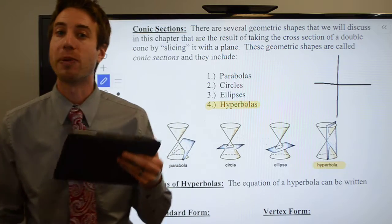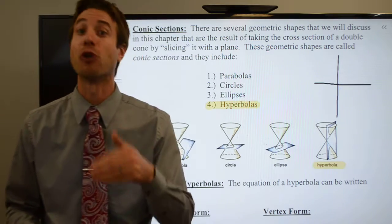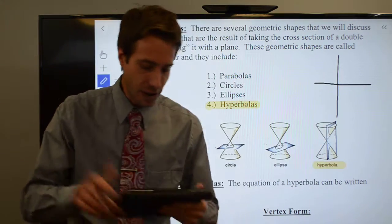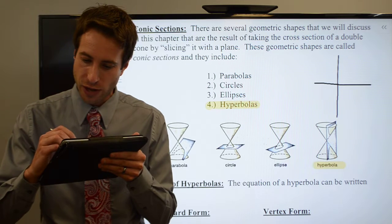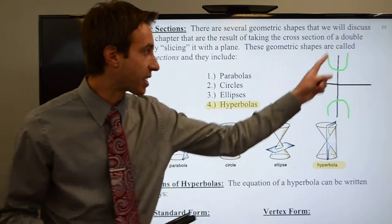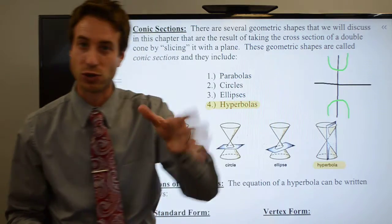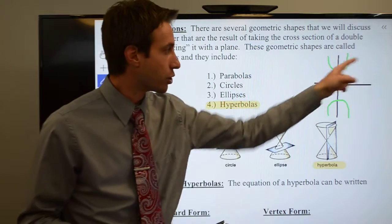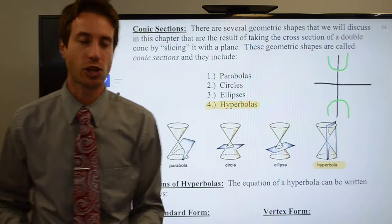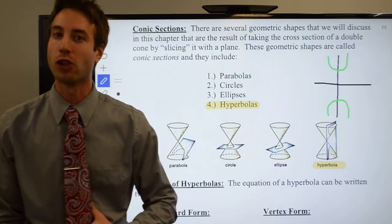What you wind up with is essentially parabolas opening away from each other — they're not exactly parabolas but they look like them. You'll have one up here and one down there, opening away from each other. The hyperbola could also be oriented horizontally, with one parabola-like curve on each side. That's the general shape we'll be graphing.